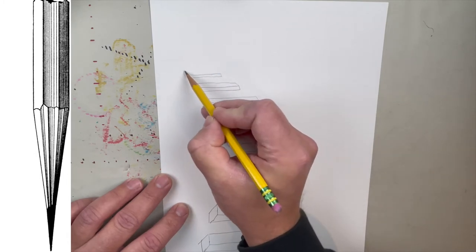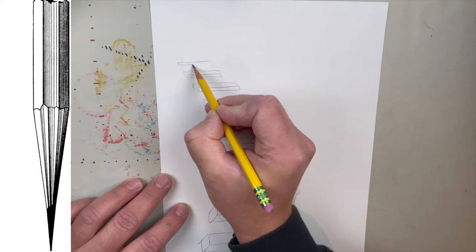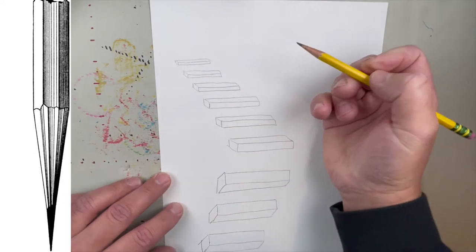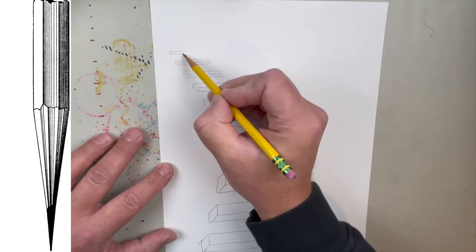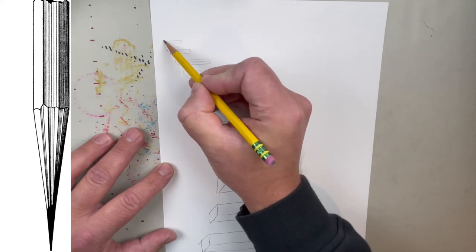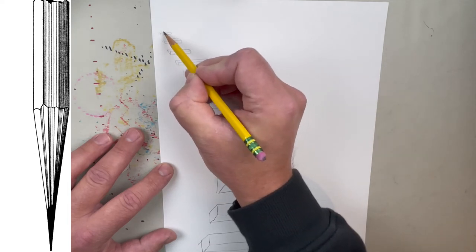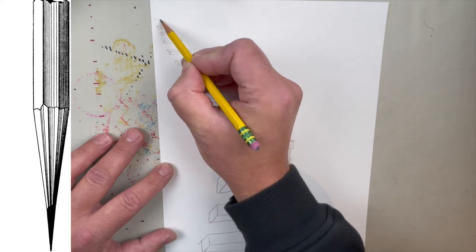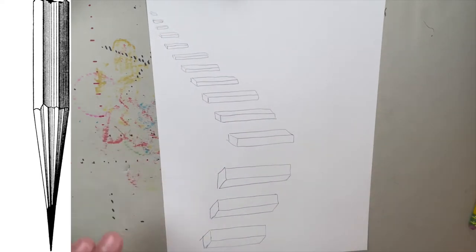But basically, as you see, I'm pretty much creating 3D stairs kind of on an angle. The first three were angled up and to the right, and then from the middle of the page, they're going to get smaller and smaller and smaller. And later when we finish up the optical illusion, you guys are going to see exactly why I drew them in this way.